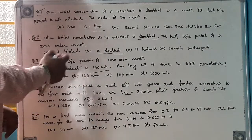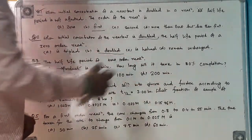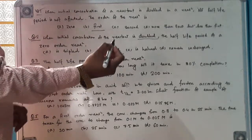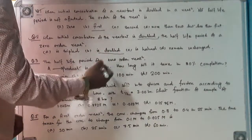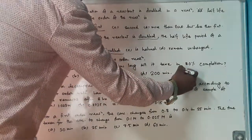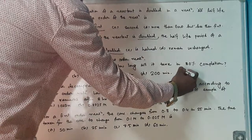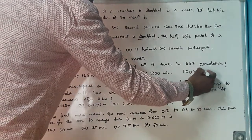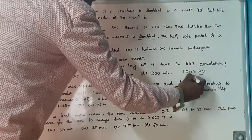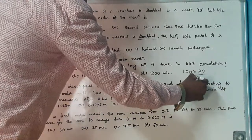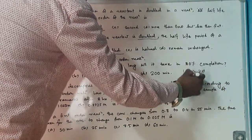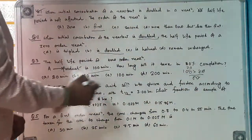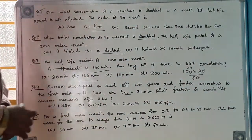Continuing Question 3: Using the unitary method, if 50% completion takes 100 minutes, then 80% completion takes 160 minutes. So the answer is 160 minutes.